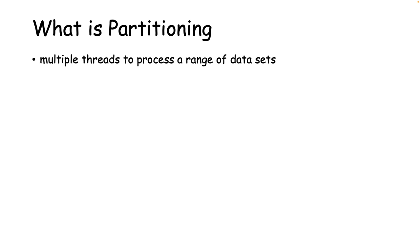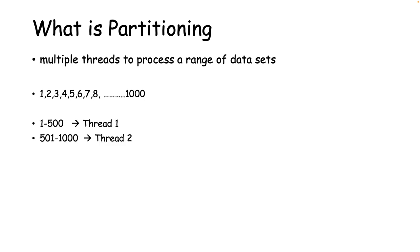What is partitioning in Spring Batch? Partitioning means assigning multiple threads to process a range of data sets. Let me simplify this with an example. Let's say I have a CSV file with a thousand rows, and I want those thousand rows processed by two different threads — Thread 1 and Thread 2. Each thread will get 500 rows to process. Thread 1 processes rows 1 to 500, and Thread 2 processes rows 501 to 1000.